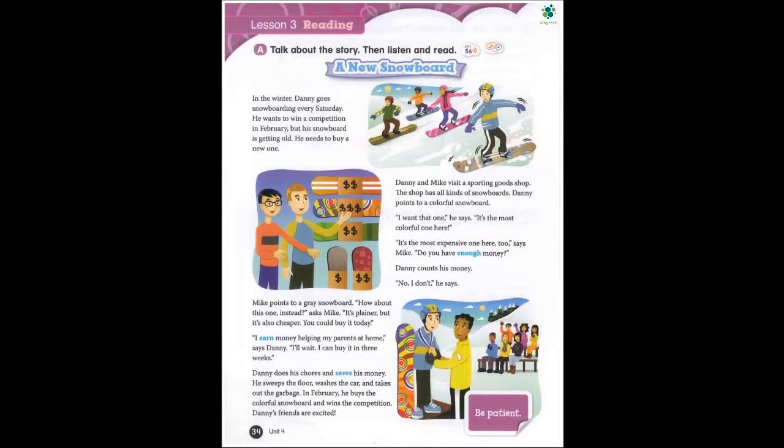Danny counts his money. 'No, I don't,' he says. Mike points to a gray snowboard. 'How about this one instead?' asks Mike. 'It's plainer but it's also cheaper. You could buy it today.' 'I earn money helping my parents at home,' says Danny. 'I'll wait. I can buy it in three weeks.' Danny does his chores and saves his money. He sweeps the floor, washes the car, and takes out the garbage. In February, he buys the colorful snowboard and wins the competition. Danny's friends are excited.